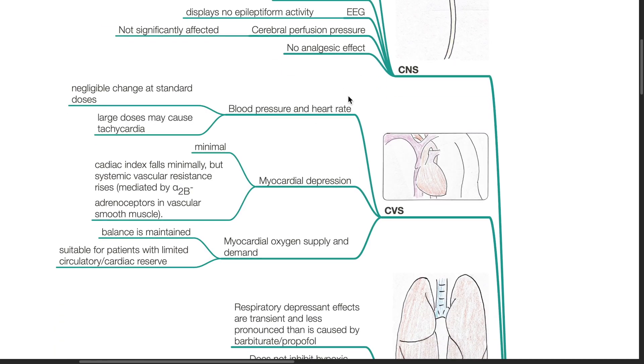Cardiovascular System: Etomidate causes negligible change in blood pressure and heart rate at standard doses. However, large doses may cause tachycardia. There is minimal myocardial depression. However, Doppler studies show that cardiac index actually falls minimally but systemic vascular resistance rises, which is mediated by alpha-2b adrenergic receptors in the vascular smooth muscle. The balance of the myocardial oxygen supply and demand is maintained and etomidate is particularly suitable for patients with limited cardiovascular reserve.